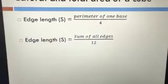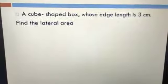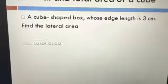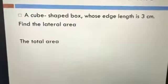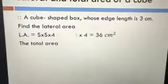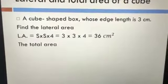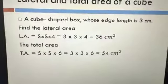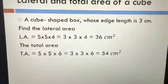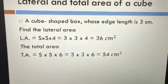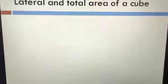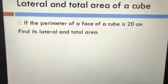First question: if we have a cube whose edge length is 3 centimeters and we want to get the lateral area and total area. Lateral area equals side times side times four, equal to 3 times 3 times 4, equals 36 centimeters squared. Total area equals side times side times six, equal to 3 times 3 times 6, equals 54 centimeters squared.